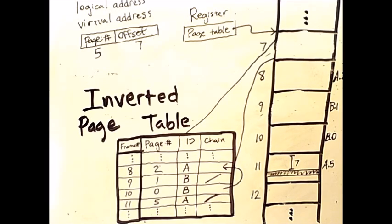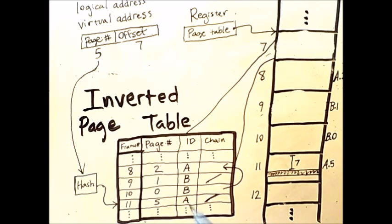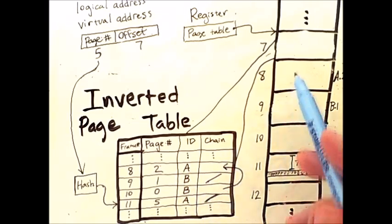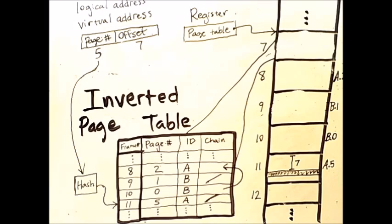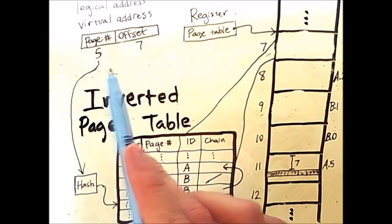This makes the table much smaller, but it makes the lookup procedure slightly more complicated. It essentially depends on the use of a hash table. The inverted hash table, which is shown here, zoomed in, but is actually also contained in memory, like all page tables, will contain one entry per frame in memory. So the frames are simply listed sequentially. The virtual address in this sort of system will have a page number and an offset.